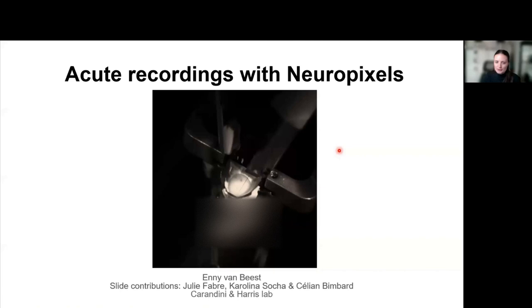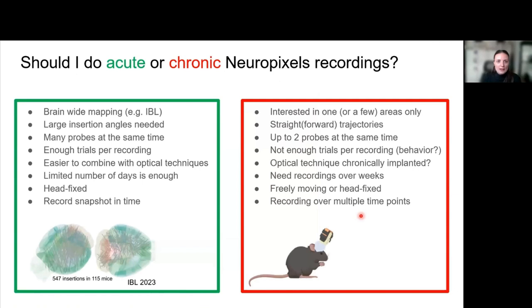I'll talk about acute recordings with Neuropixels probes. Slides have been contributed by Julie Faber, Carolina Socha, and Céline Bimbardt from the Carolini-Harris lab. Because we have a whole topic about chronic Neuropixels tomorrow, I wanted to first discuss when we should do acute recordings instead of chronic or vice versa. One example when you want to do acute recordings is when you do brain-wide mapping, like the IBL has been doing.